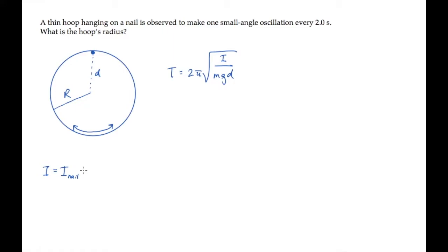It says that the moment of inertia about the nail is the moment of inertia about the center of mass plus m times d squared, where d is the distance that the pivot is shifted from the center of mass.